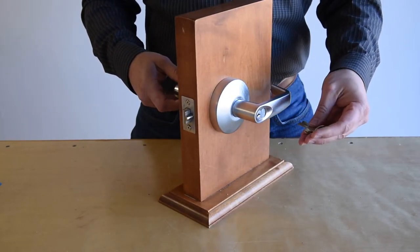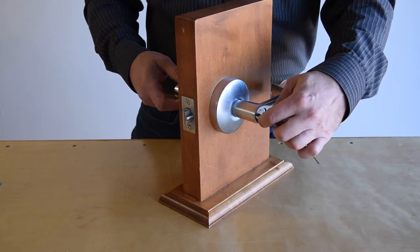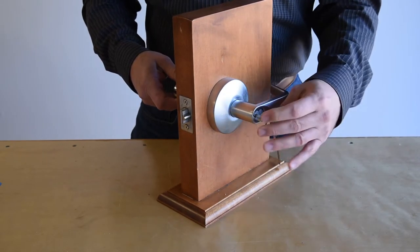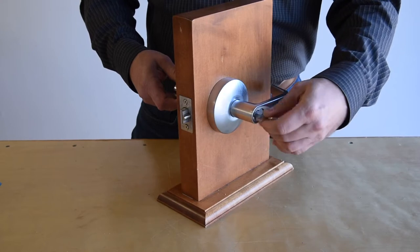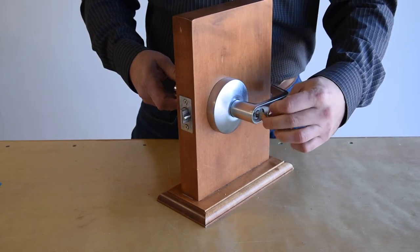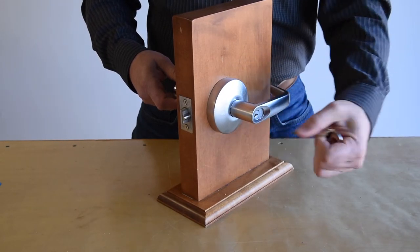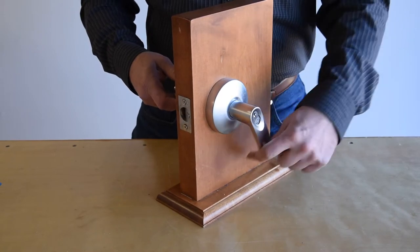To unlock the lock, simply reinsert the key into the lever, rotate in the opposite direction 360 degrees, remove the key, and the lock is now permanently unlocked.